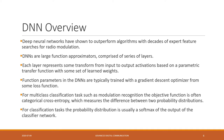For the task of multi-class classification, which is the case in signal modulation classification, the objective function is often the categorical cross-entropy. For the classification task, the probability distribution is usually a softmax of the output of the classifier network.